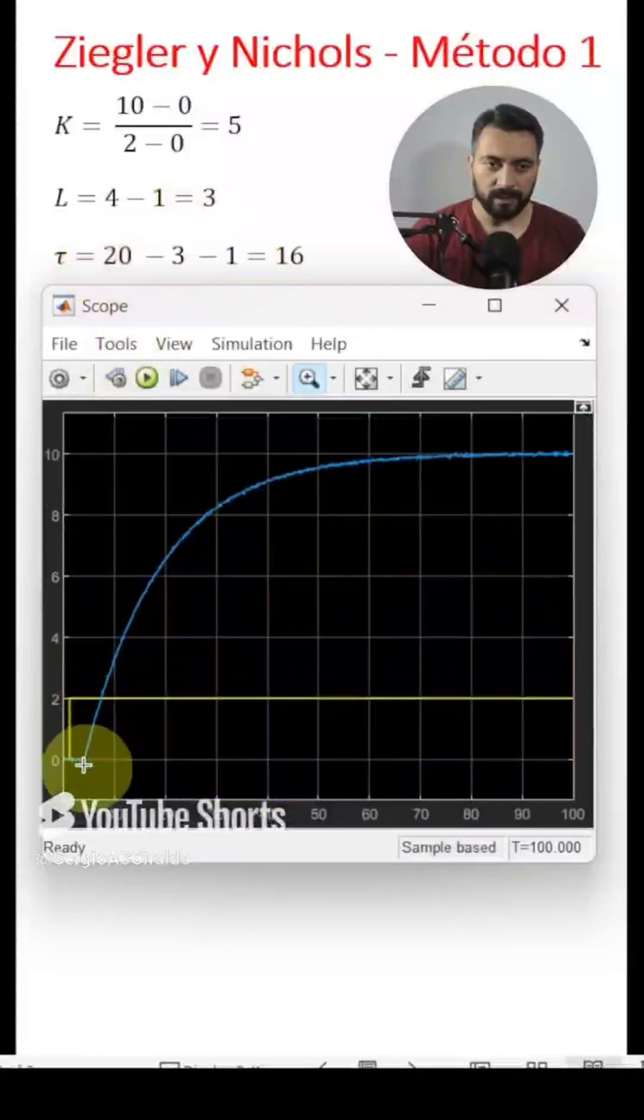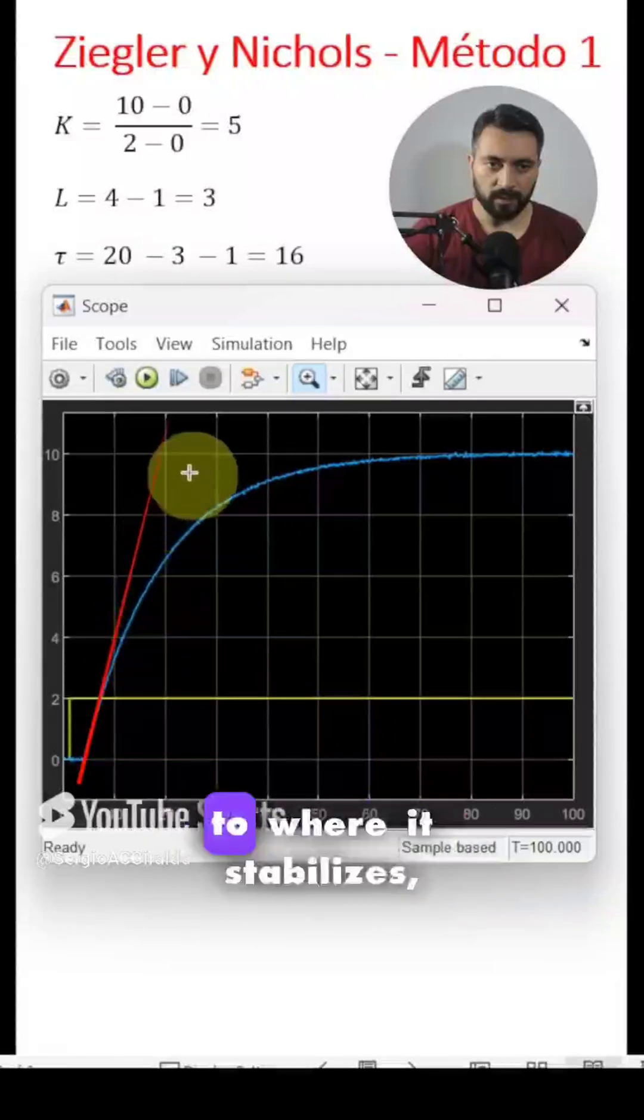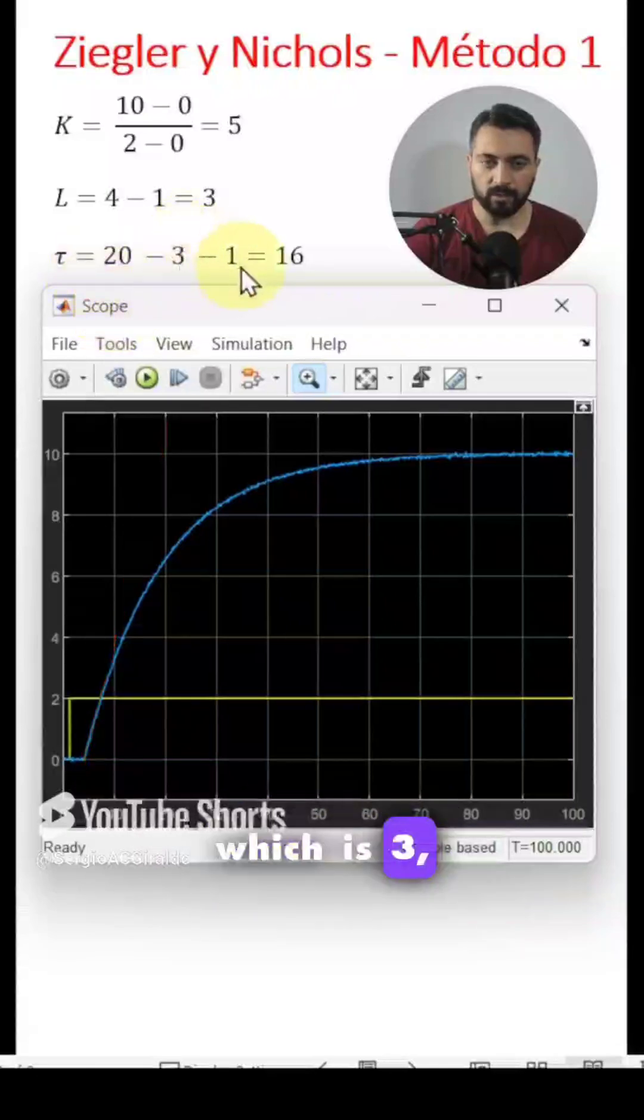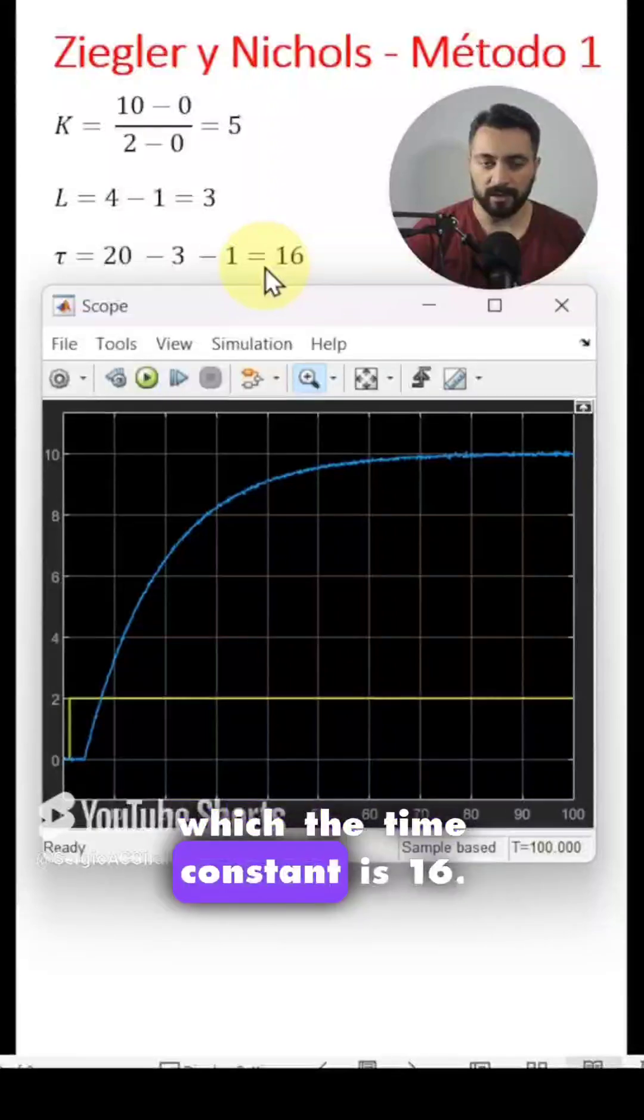For the time constant, if I draw a tangent from the delay point to where it stabilizes, which is 10, you'll see that it's roughly 20. I subtract the delay, which is 3, and subtract 1, which is where the step starts, so the time constant is 16.